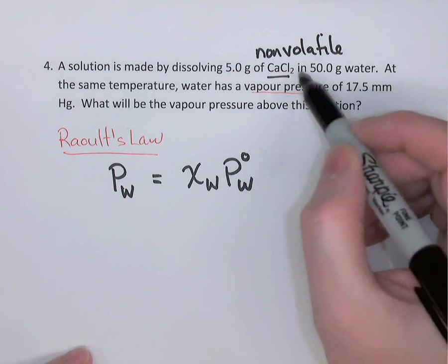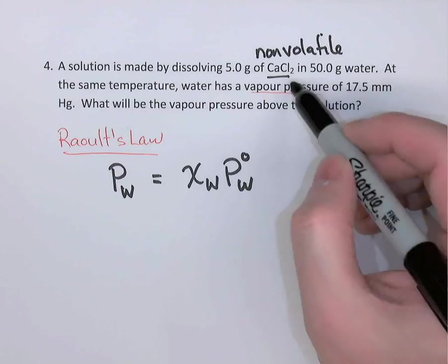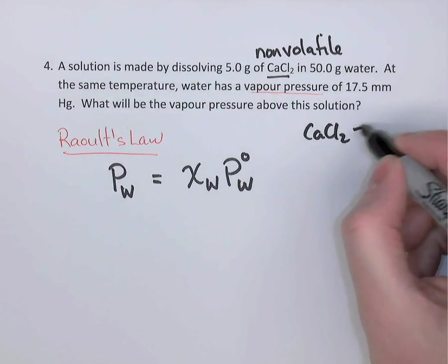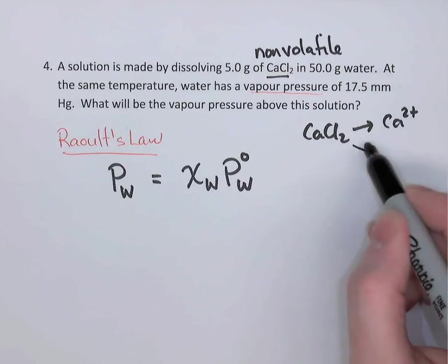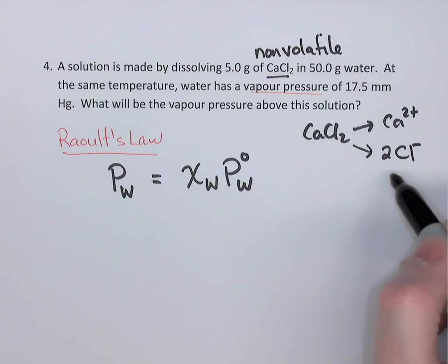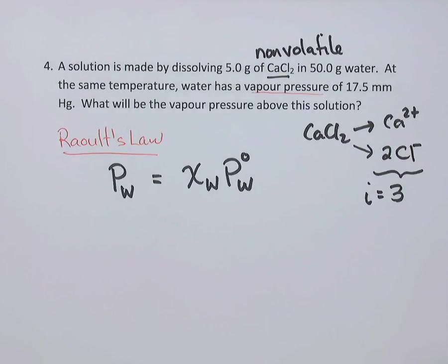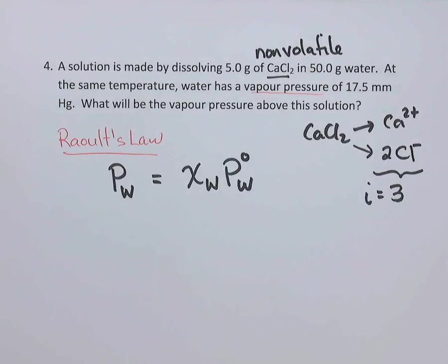And looking at it, CaCl2, when it breaks apart, one mole of CaCl2 will give us one mole of calcium ions, but it will also give us two moles of chloride ions for a total of three particles. So we know that the Van't Hoff factor, in this case, would be three. You get three particles for every one formula unit of salt that ionizes.